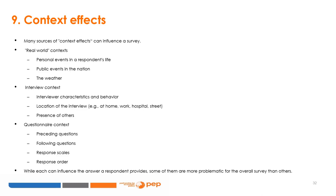The environment may affect how individuals respond in a survey — these effects are called context effects. Real-world contexts include personal events in a respondent's life, public events, weather, and other life-altering characteristics. The interviewer's characteristics and behavior can also change how the respondent processes and responds. Where the interview is conducted — at home, work, hospital, or the street — and the presence of others may also affect responses.